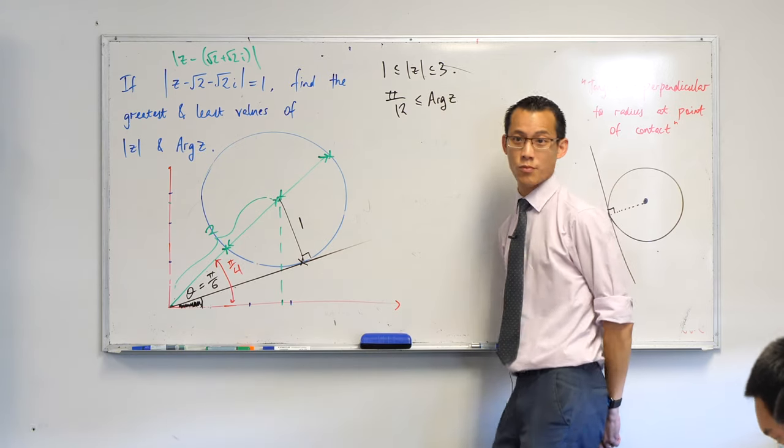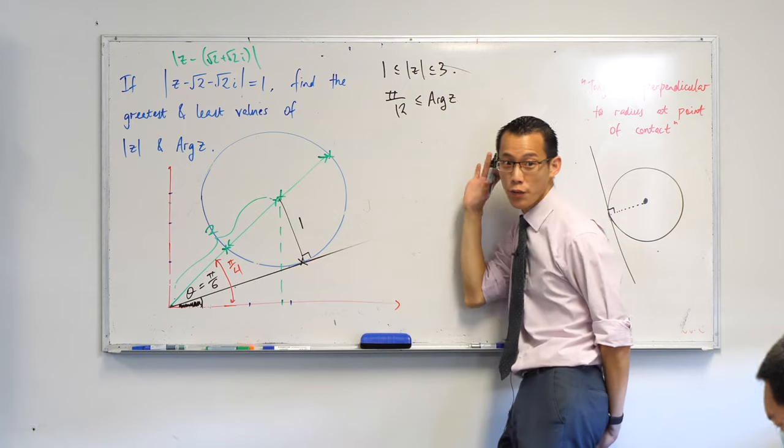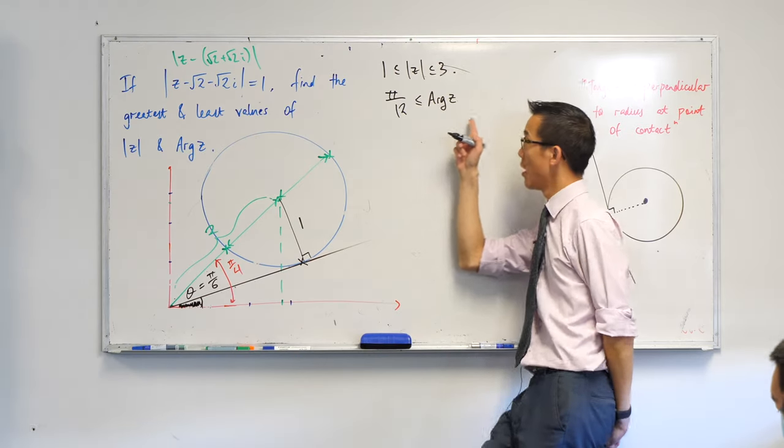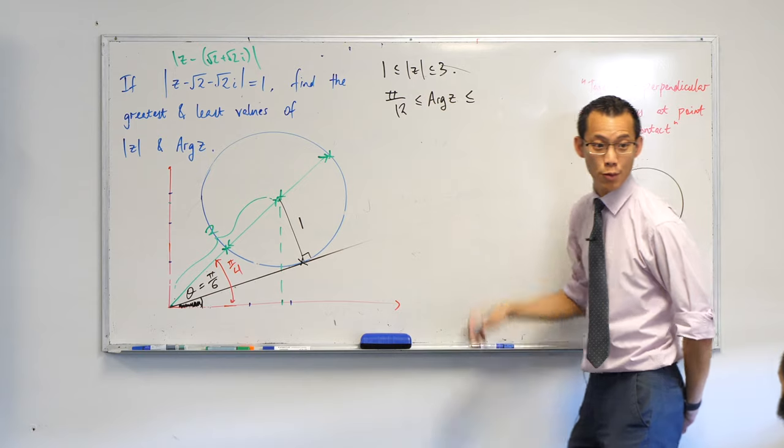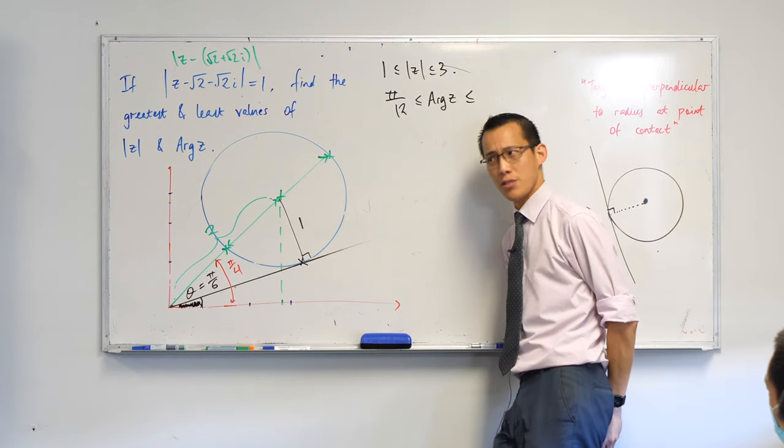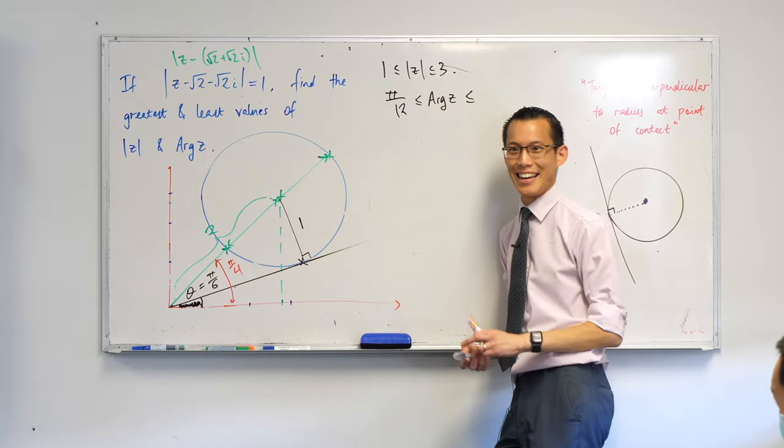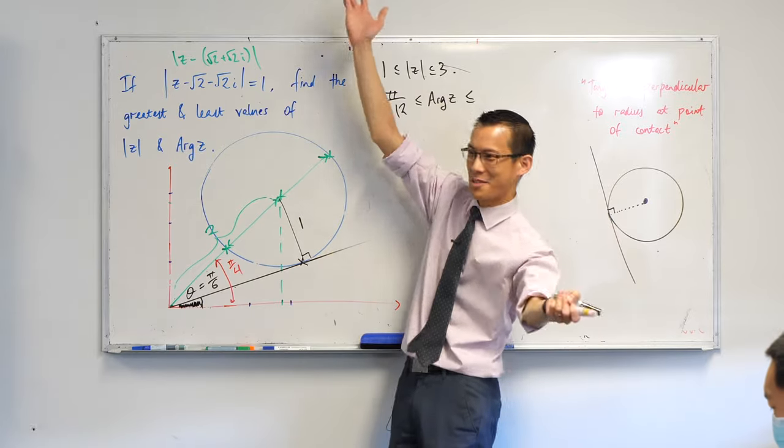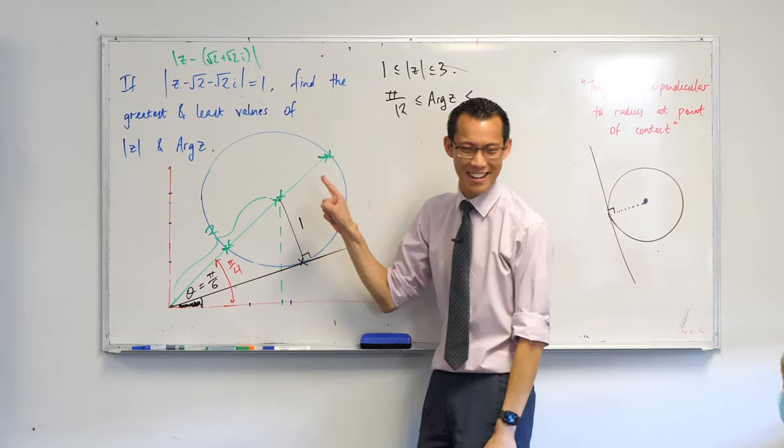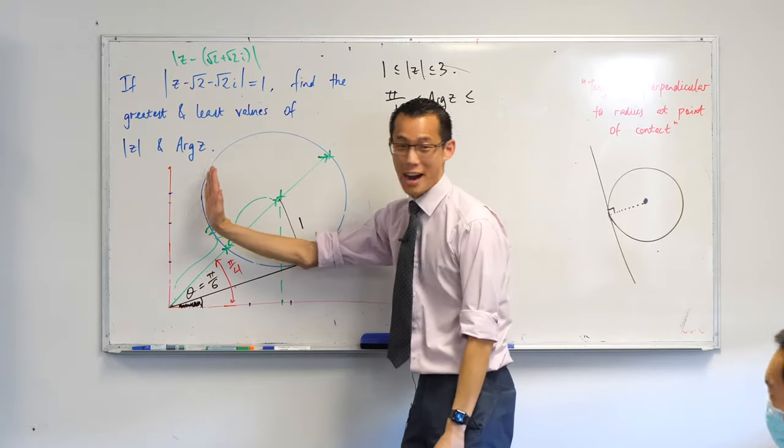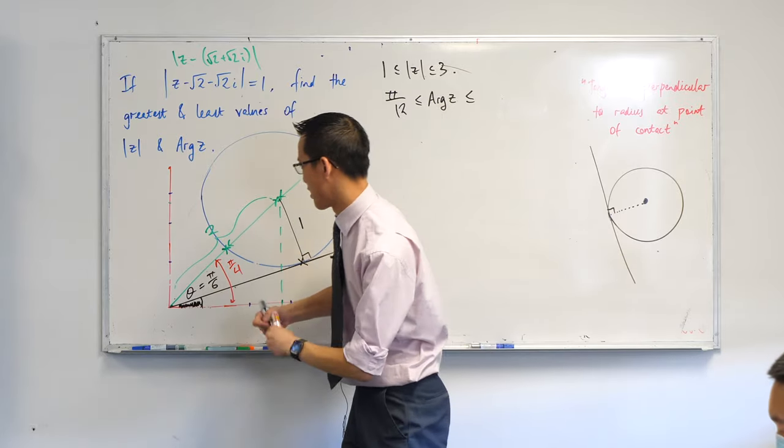Now I'm going to pause here. At this point, hopefully you realize why I had to say the principal argument. I'm now asking for a maximum value. If you don't restrict yourself to the principal argument, you can just make it anything you like. You're like, 'I want my angle to be bigger, I'll just rotate a few more times around.' So I'm clearly only looking for the principal argument.